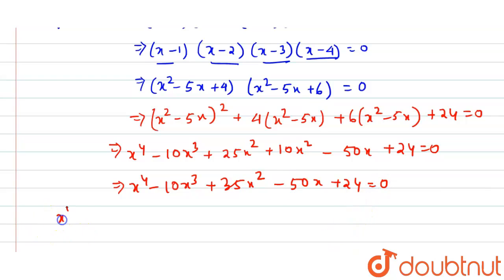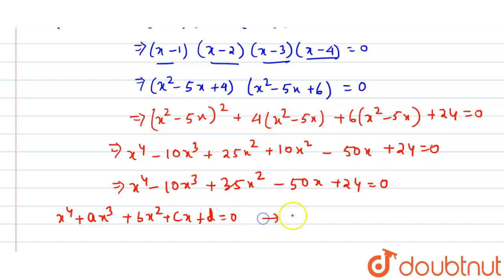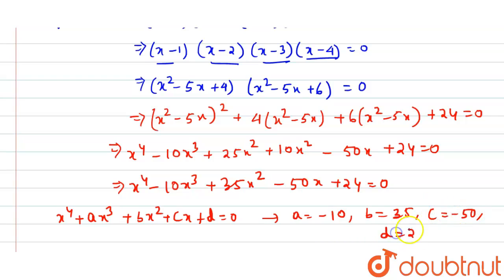Comparing this with x to the power 4 plus ax³ plus bx² plus cx plus d equals to 0, we get a equals to minus 10, b equals to 35, c equals to minus 50, and d equals to 24. That is the correct answer.